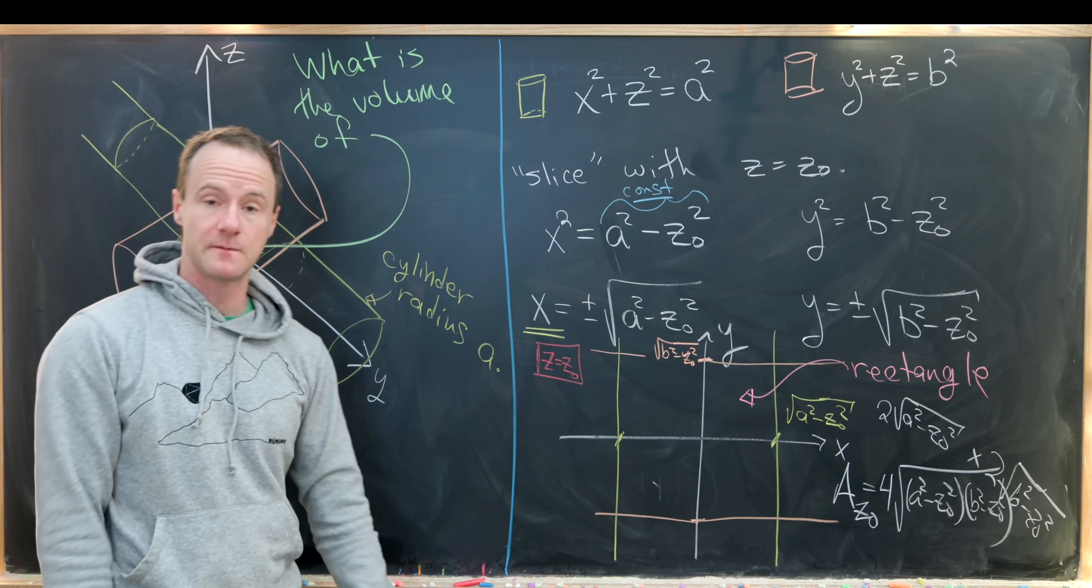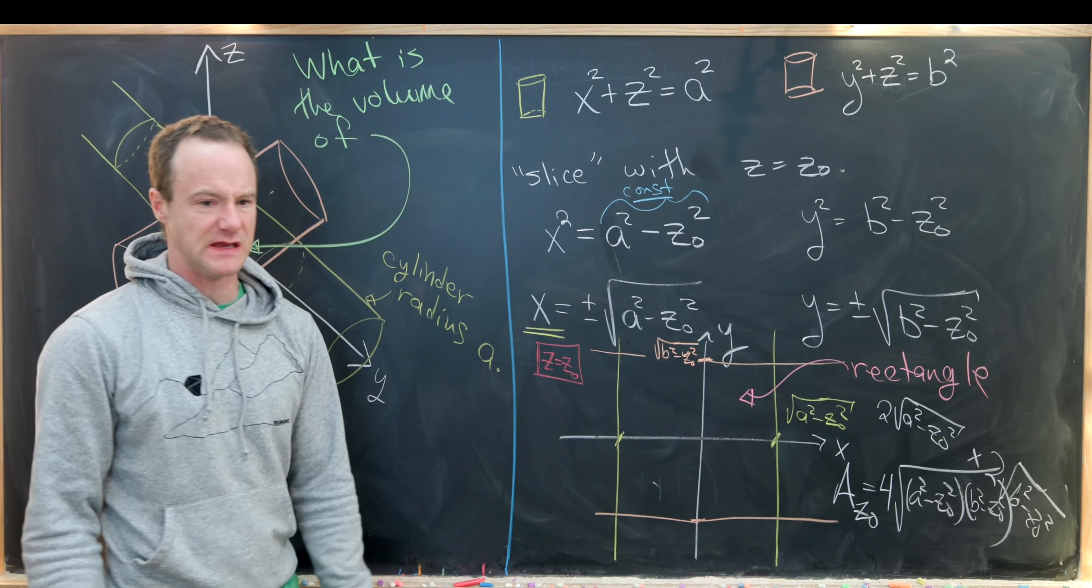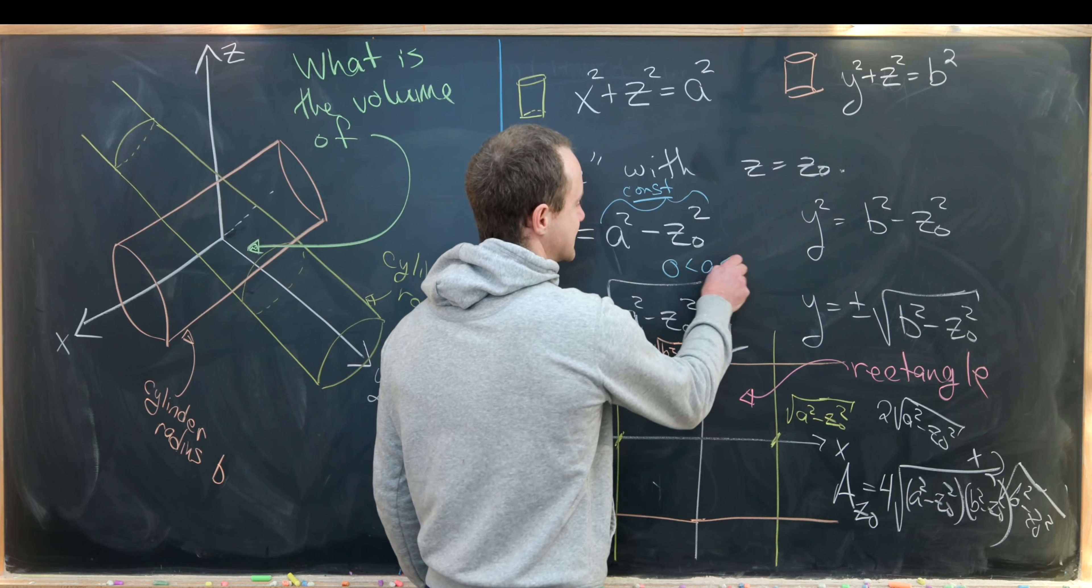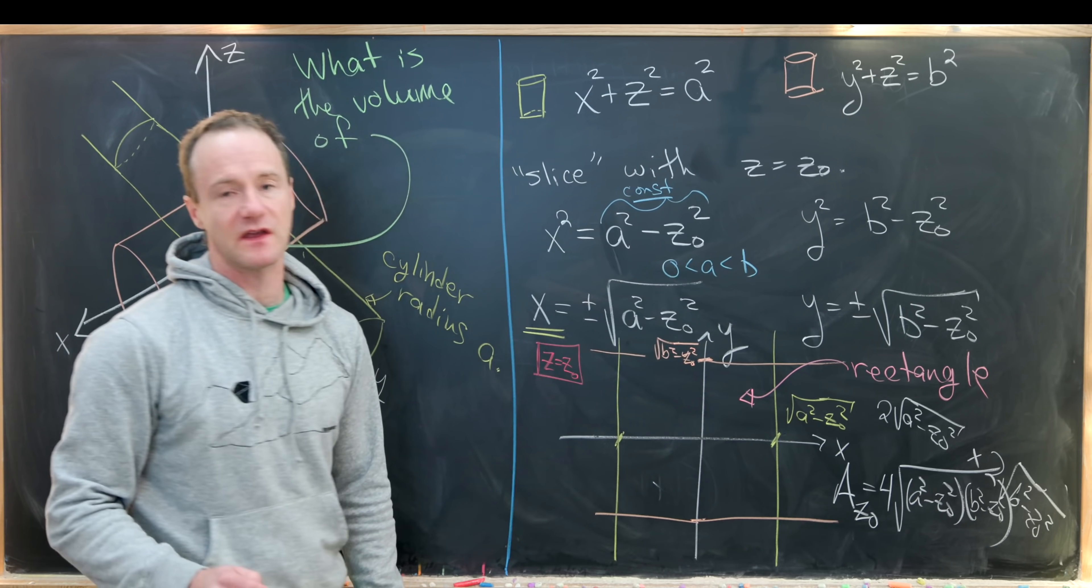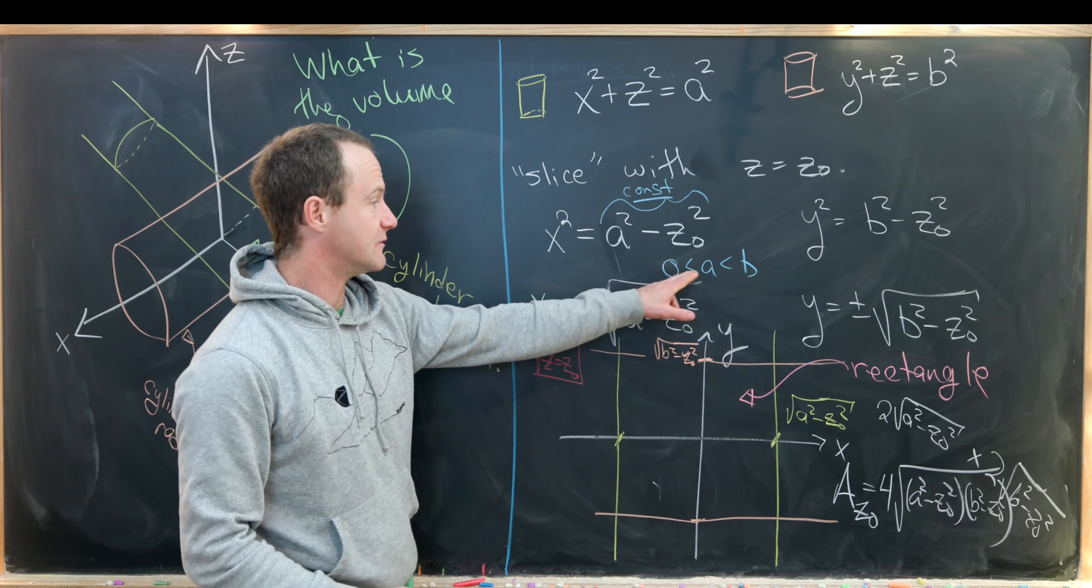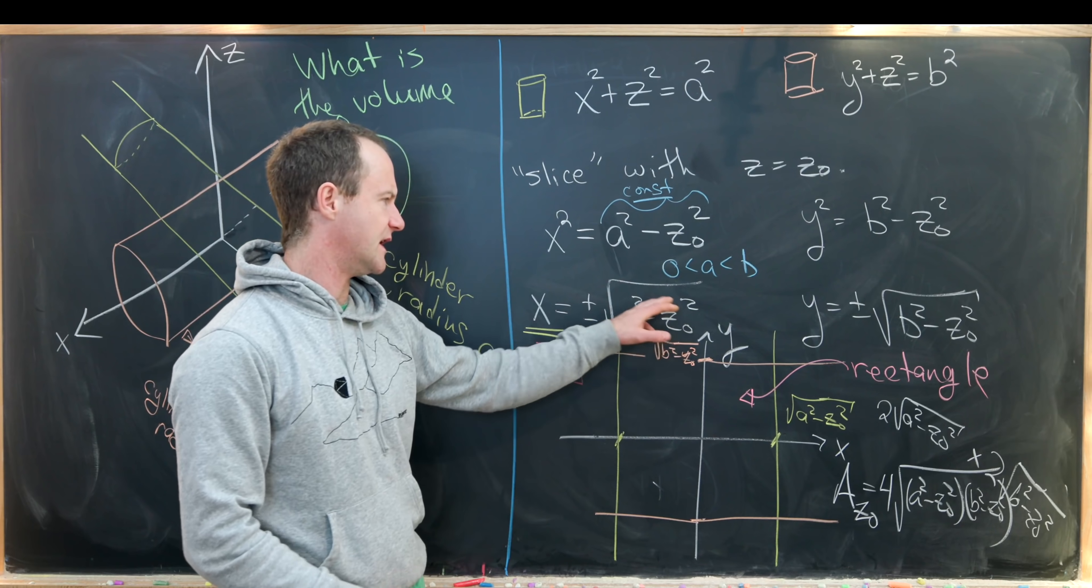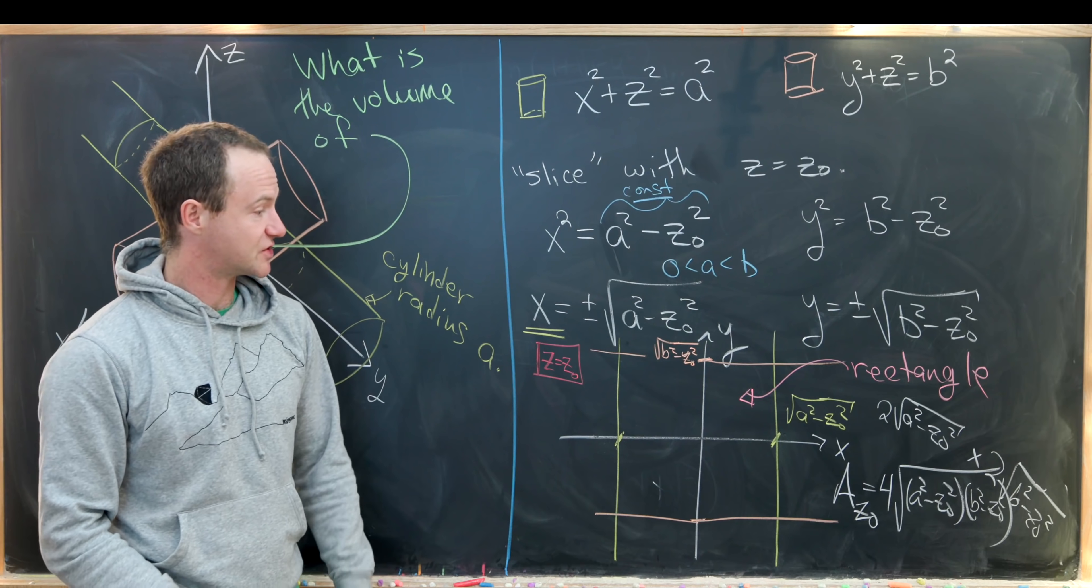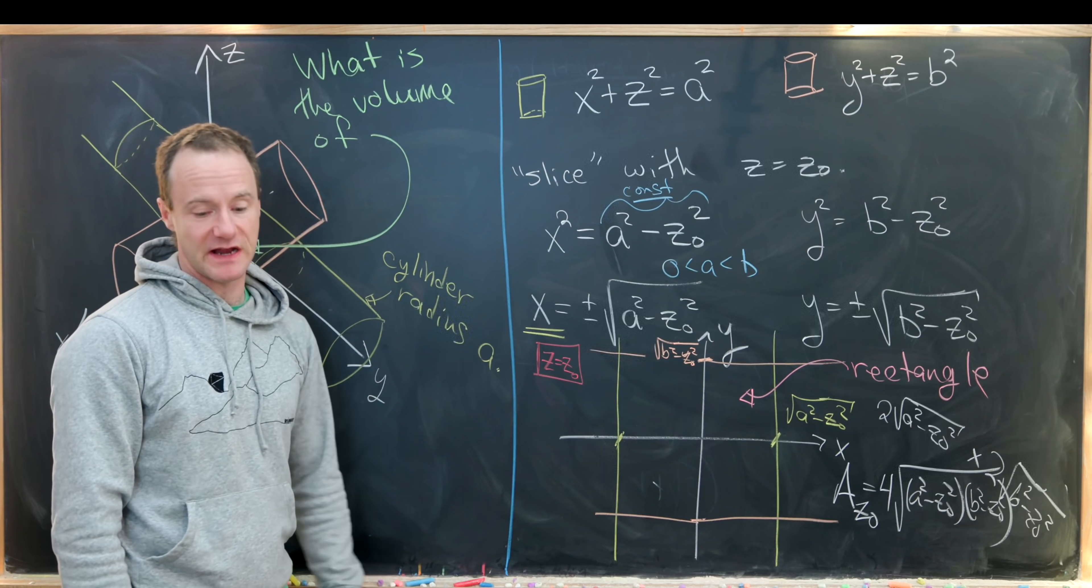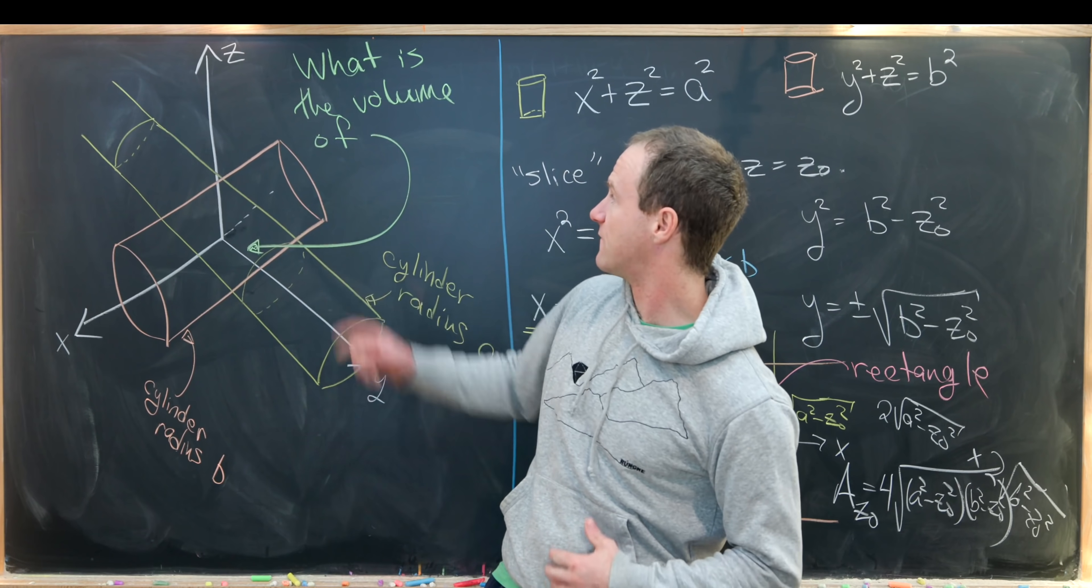Using symmetry, we can take zero to be the smallest possible z value and then just double the volume that we get because we're looking at the volume just above the z-axis. We'll have exactly the same volume below the z-axis. So we'll take z starting at zero and it will end at whichever one is smaller a or b. Let's say that we have a ≤ b, although doing it the other way would be fine as well. So that means we'll have z run from zero to a.